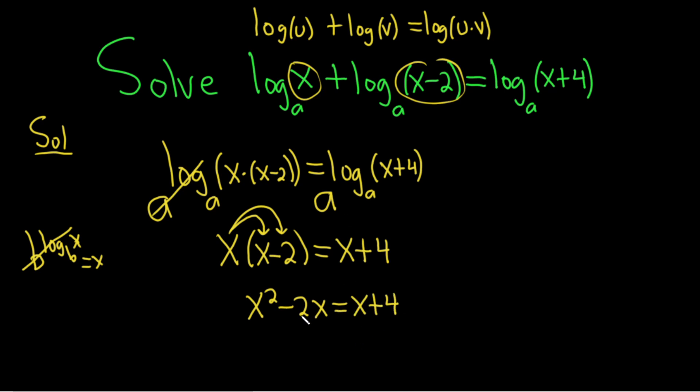This is a quadratic equation. Whenever you have a quadratic equation, you should try to set it equal to zero and solve. So we'll subtract x and subtract four from both sides. We end up with x squared minus three x minus four equals zero.